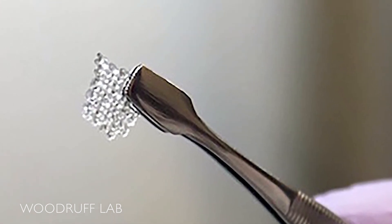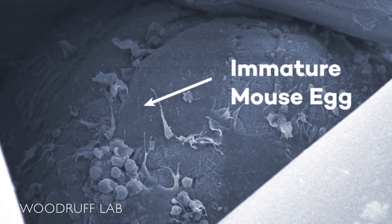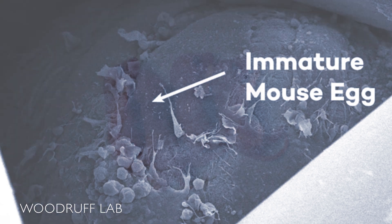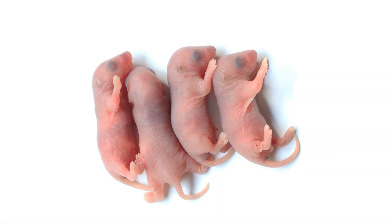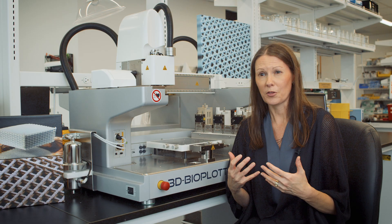When we implanted those follicles in our scaffolds that we printed and put it in a sterile mouse, that led to the birth of a live mouse from the transplanted ovaries. The 3D bioprinter combined with our biomaterial system